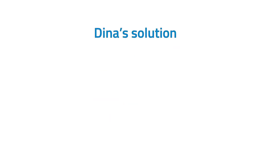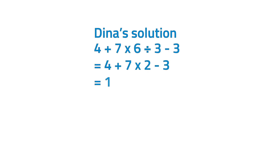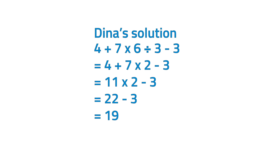Lastly, let's see Dina's solution. Dina started with division. 6 divided by 3 is equal to 2. Then she proceeded with addition. 4 plus 7 is equal to 11. Next, she multiplied 11 by 2. 11 times 2 is equal to 22. Lastly, she subtracted 3 from 22. 22 minus 3 is equal to 19. Dina's answer is 19.